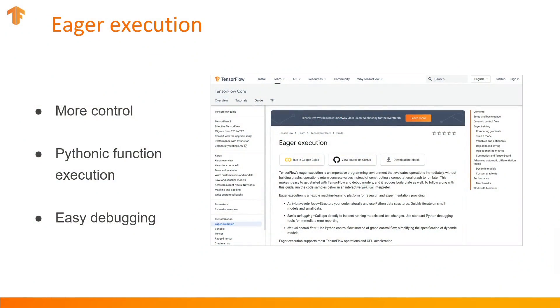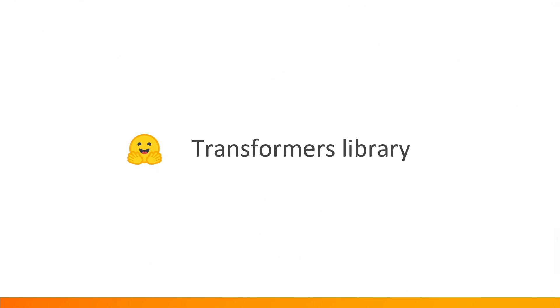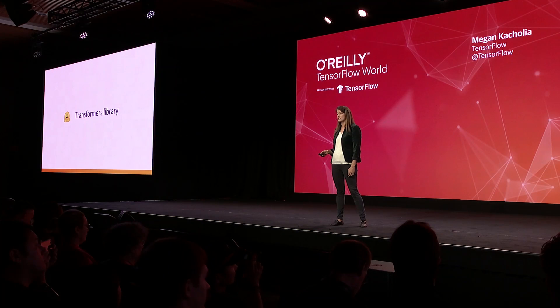When you need a bit more control to create advanced algorithms, 2.0 comes fully loaded with eager execution, making it familiar for Python developers. This is especially useful when you're stepping through, doing debugging, making sure you can understand step by step what's happening. This also means there's less coding required when training your model, all without having to use session.run. To demonstrate the power of training models with 2.0, I'll show you how you can train a state-of-the-art NLP model in 10 lines of code using the Transformers NLP library by HuggingFace, a community contribution.